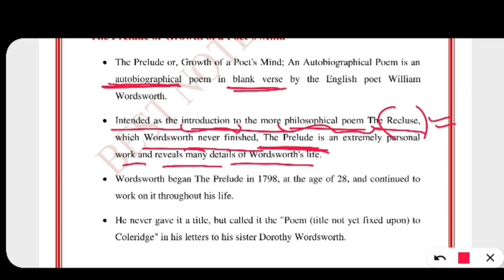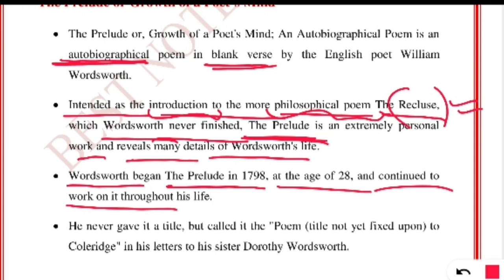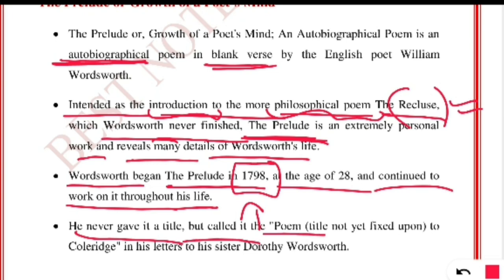Wordsworth began The Prelude in the year 1798 at the age of 28 and continued to work on it throughout his life. He never gave it a title but called it 'the poem title not yet fixed upon' to Coleridge, and in his letters to his sister Dorothy Wordsworth he mentioned that the title was not settled at that time.